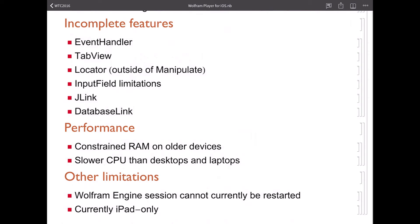There are other pieces of functionality like J-Link and Database Link which rely on Java language features that simply will never be available on iOS. Performance: this is not a desktop-class computer, but it's getting closer every year. The CPU is a little bit slower but acceptable in many cases, and it has a limited amount of RAM. There is no virtual memory on these devices, so when it's out of RAM the app basically gets killed by the operating system. If you are doing computations requiring huge amounts of RAM, that could be a problem. The newer Apple iPads have more RAM than the older ones, so newer devices are going to work a lot better.